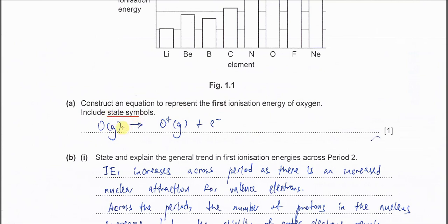Gaseous atom of oxygen - do not put O2, it's just oxygen atom - and is ionized to form oxygen with one positive charge. It must be gaseous form. Release one electron.